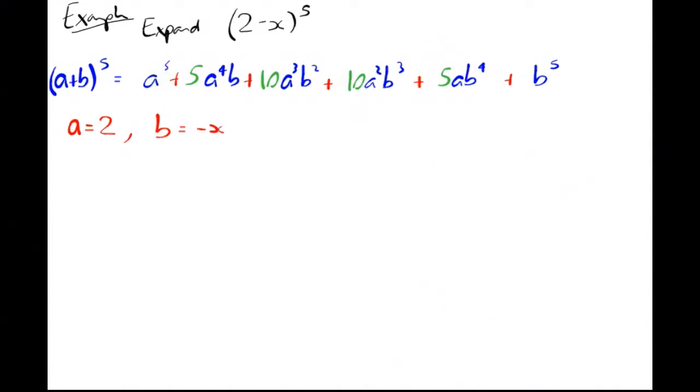So if we sub that in, I get 2⁵ + 5 times 2⁴ times (-x). If ever you times it by minus, it's neater to put it in brackets. Plus 10 times 2³ times (-x)² + 10 times 2² times (-x)³ + 5 times 2 times (-x)⁴ + (-x)⁵. 2 to the 5, straightforward, 32.